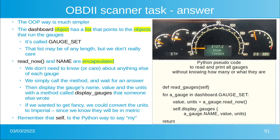And if we wanted to get fancy, we could convert the units to imperial or US units. Remember that self is the Python way of saying my. If you look at the bottom right-hand corner, you're defining a method called read gauges, then creating a loop with the for keyword: for a gauge in dashboard dot gaugeset. We're going to cycle through the list called gaugeset, and every time we cycle through, whatever is in that list is placed in our temporary variable called gauge.